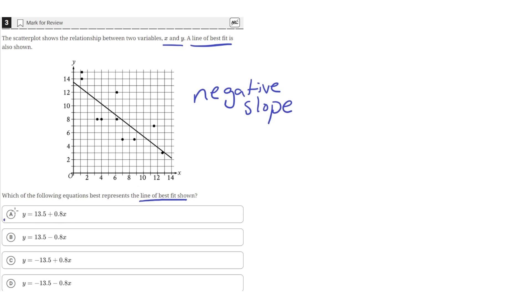So A does not have a negative slope. The coefficient of x is positive. That means this equation has a positive slope, but we want negative slopes. So A is wrong.